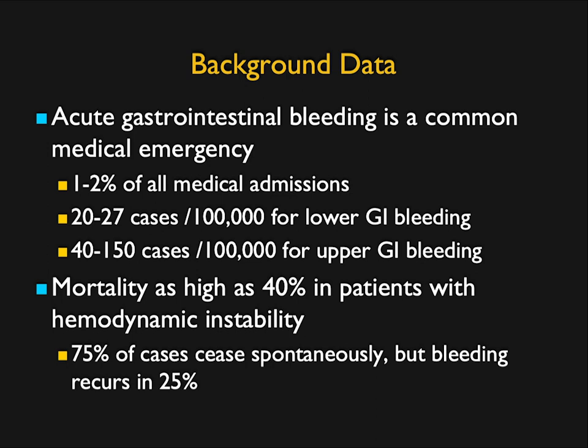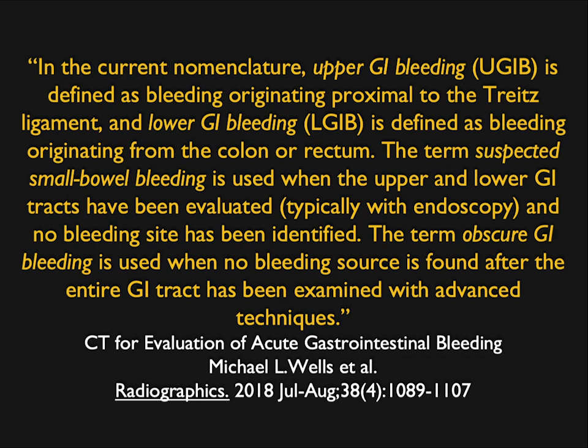Patient mortality is as high as 40% in a patient with hemodynamic instability. One of the challenges with GI bleeding is that about 75% of cases cease spontaneously, and bleeding recurs in about 25% of cases. You start working the patient up and find nothing — was it that you didn't find the pathology, or did it just stop bleeding? Upper GI bleeding is defined as bleeding proximal to the ligament of Treitz, and lower GI bleeding is beyond the ligament of Treitz.